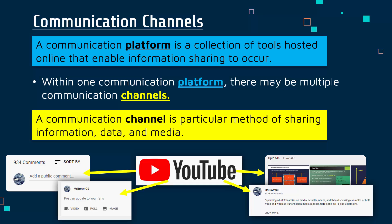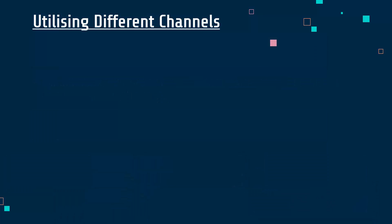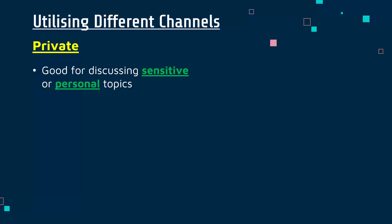Most of these examples can be either public or private. If you made a video, you can post it as private and keep it within a certain number of people. The focus from now on is thinking about how you can best utilise the different channels, in particular private versus public channels. Private channels are good for where you want to discuss sensitive or personal topics — an example might be direct messages on social media, or a live chat function on a website where you speak to an individual rather than posting a public comment.